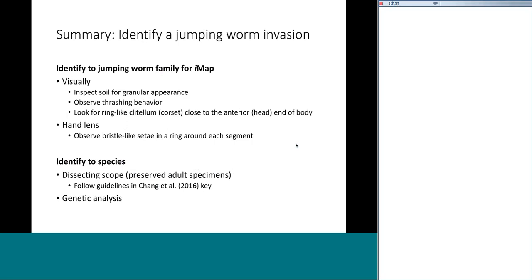A quick summary of identification: for IMAP, visually inspect the soil, observe that thrashing behavior, and look for a corset clitellum close to the head. If you're feeling more ambitious, look for the bristle-like setae — little hairs around the ring of each segment. To get down to species, you'll need a dissecting scope, preserved adult specimens, and the technical key.